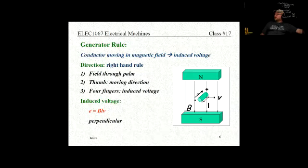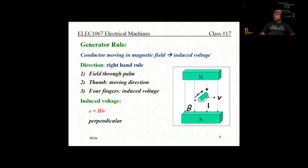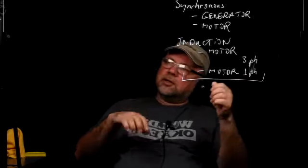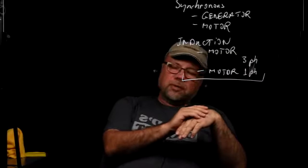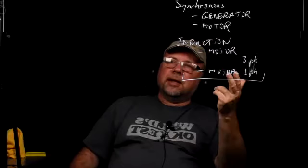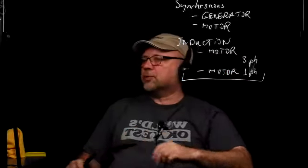Now here is the working principle: we have a magnetic field and a conductor. If you expose the conductor to a changing magnetic field, an EMF is going to be induced. I want to make sure everybody's on the same page — do we understand the difference between EMF and a voltage drop across a resistor? We've talked about it a few times; let's see who remembers.